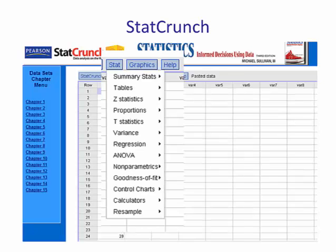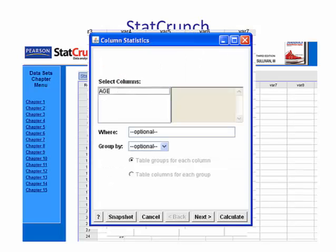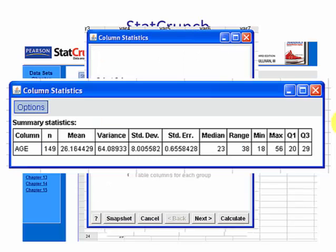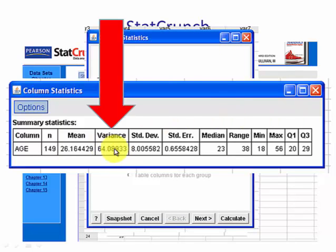How do we compute the sample variance in StatCrunch? Well we go to Stat, Summary Stats, and then we choose Columns. We select the variable Age and then we see that the variance is right here.